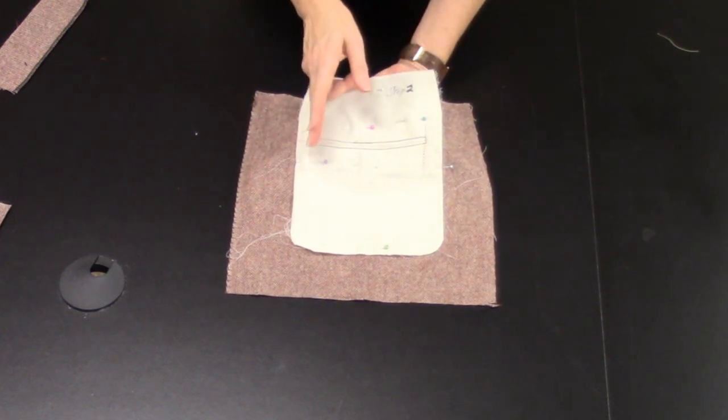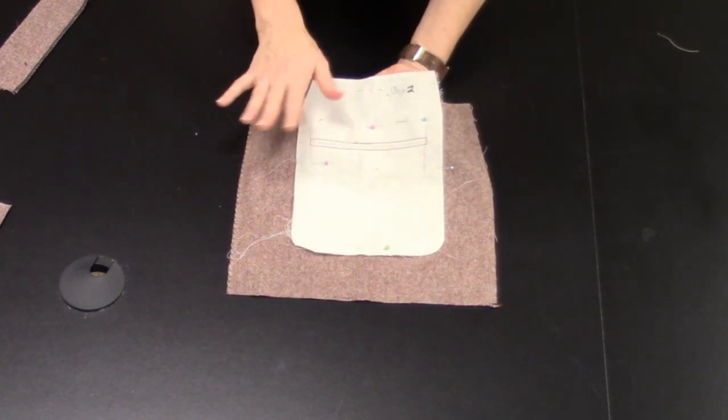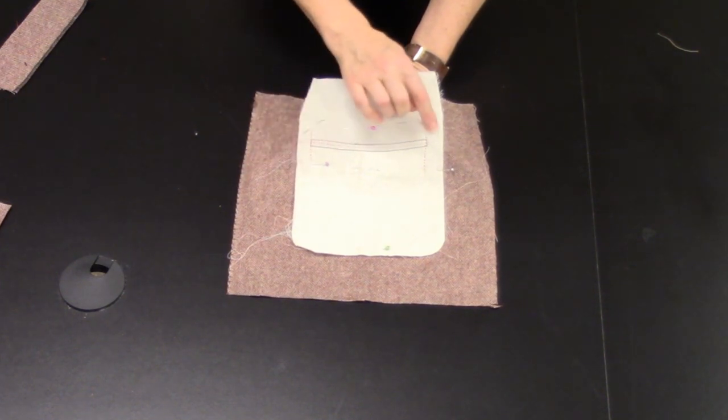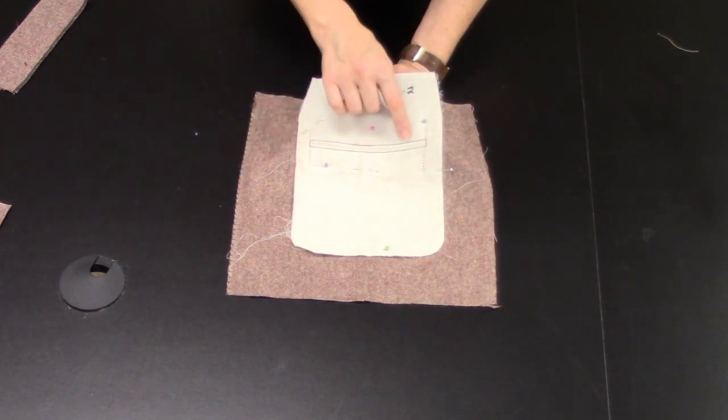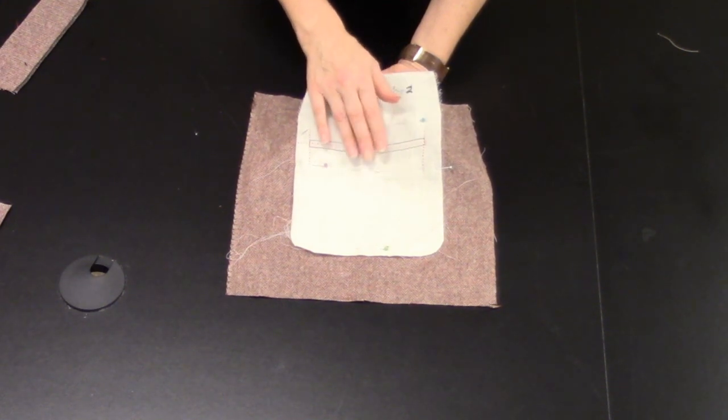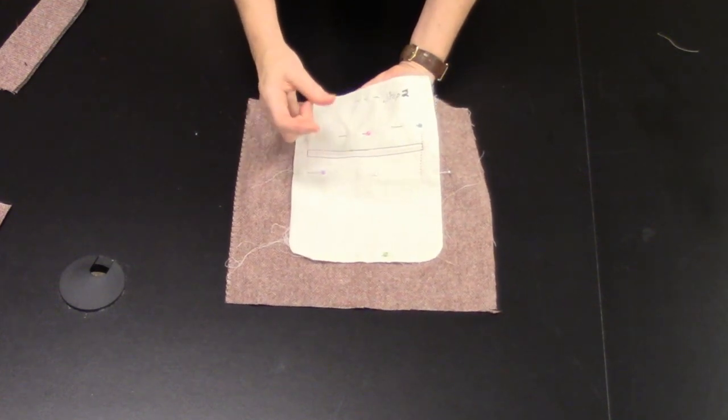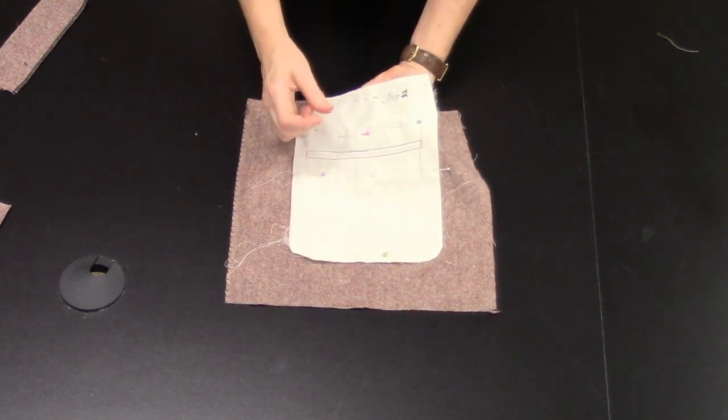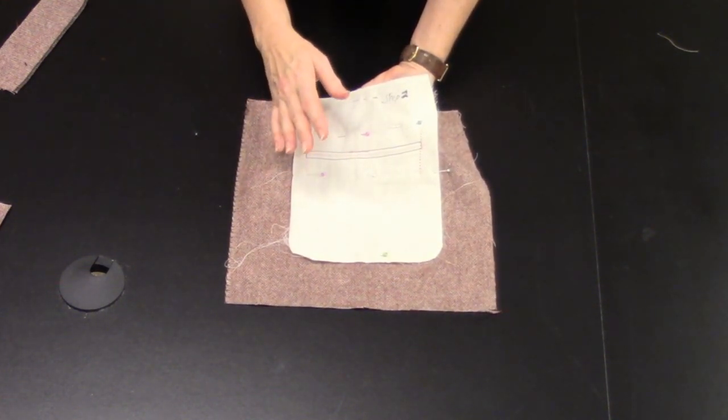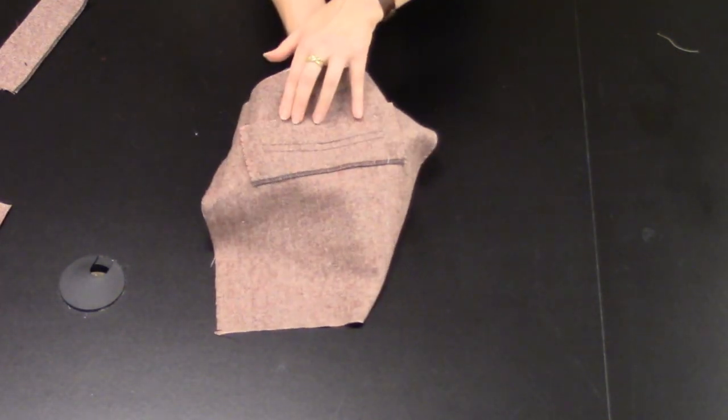We're already going to be clipping into those corners in a step or two and I don't want that to be weakened at all. So stitch along an eighth of an inch or so above and below that line. This is the stitching that sets up the width of your pocket piping or those lips, so be very careful with this and you have stitched through all the layers.